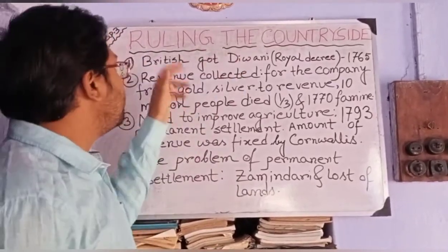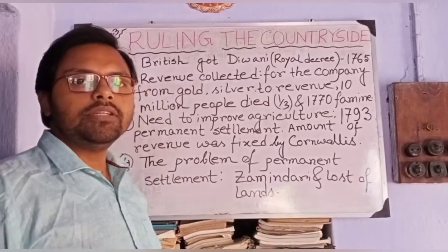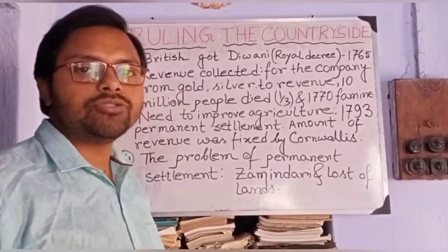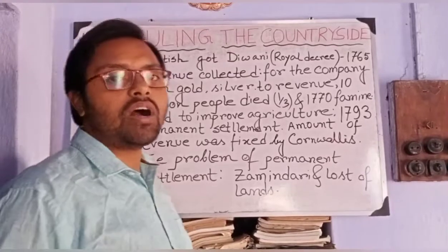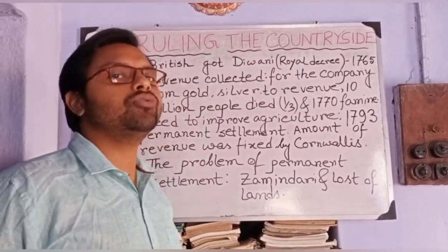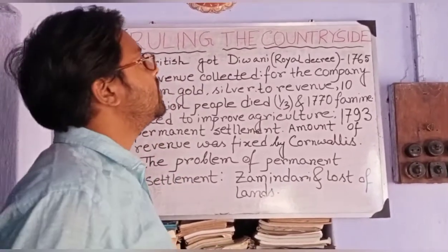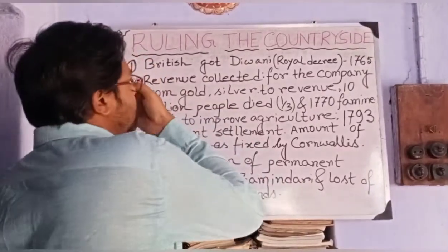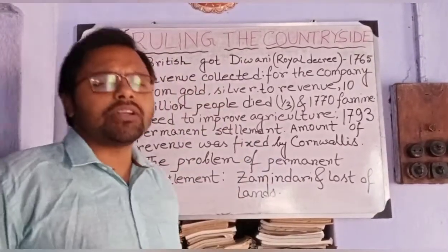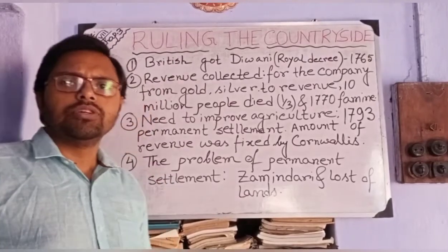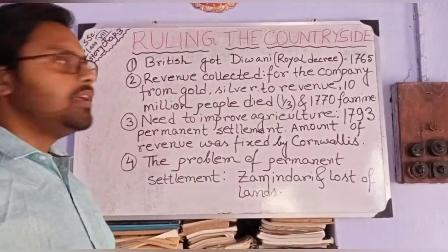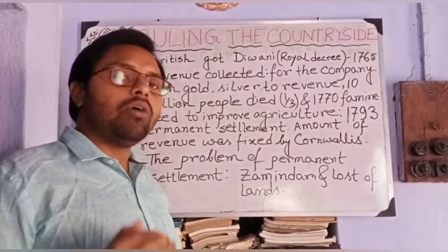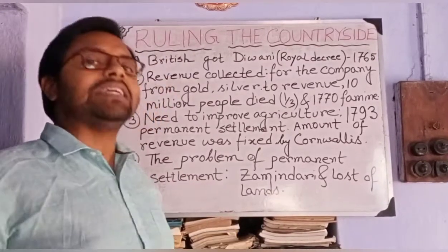Ruling the Countryside. This is the third chapter of History, Class 8, CBSE Syllabus. Ruling means rule by whom? The British ruled over our country, India. Near about 250 years they ruled over India. In this chapter we will read about the ruling of the British and the starting period of it.